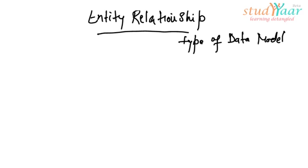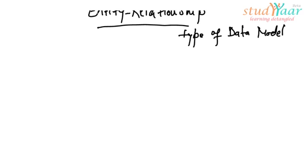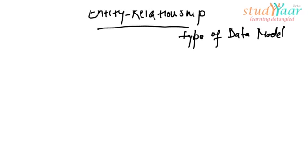So let's see how does Entity Relationship Model maps a real world into the database. Let's first understand what an entity is. An entity is any real world object or thing, any real world thing.